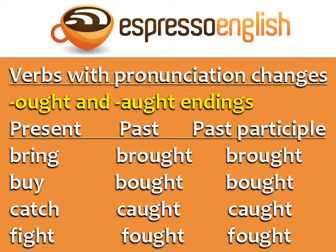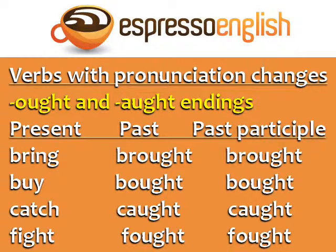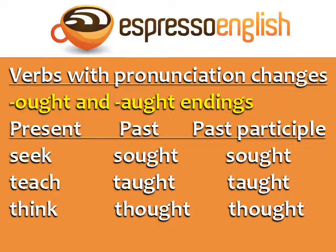Finally, we have the verbs with OUGHT endings in the past and past participle. This can be spelled OUGHT or AUGHT, but the pronunciation is the same. Bring — brought — brought. Buy — bought — bought. Catch — caught — caught. Fight — fought — fought. Seek — sought — sought. Teach — taught — taught. Think — thought — thought. Remember that the G is silent in these verbs.